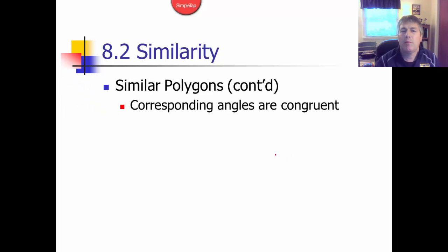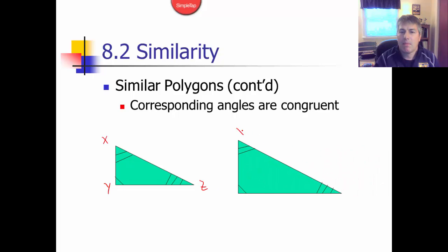Also, in similar polygons, the corresponding angles are congruent. Again, if I have a triangle X, Y, Z, and now we have X prime, Y prime, Z prime,